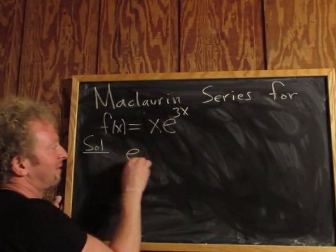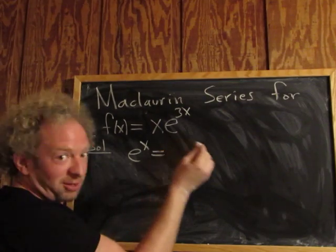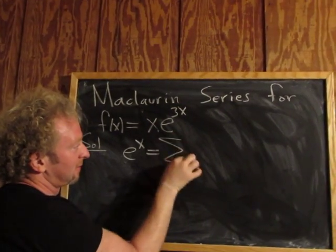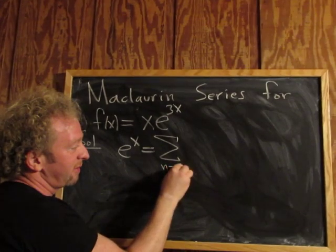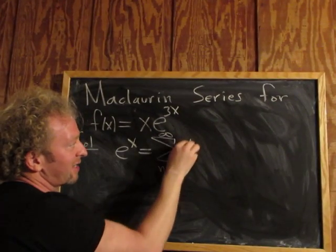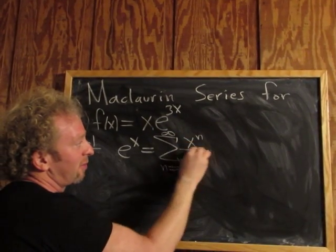So for e to the x, it's equal to the infinite sum as n runs from 0 to infinity of x to the n over n factorial.